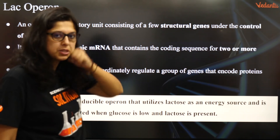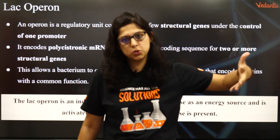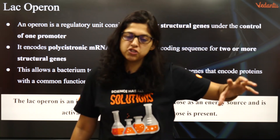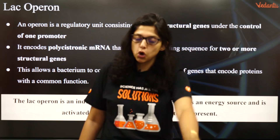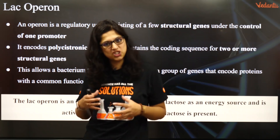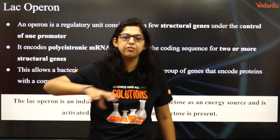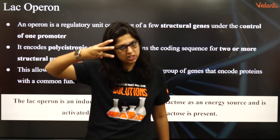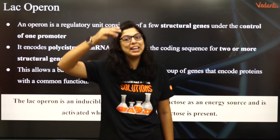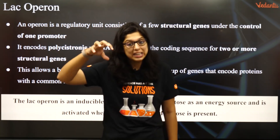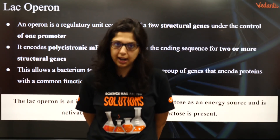What is a lac operon? First of all, it is a group of genes found in E. coli. An operon is a group of genes which function under a single operator. The operator is a gene which regulates many things. There are 3 structural genes: lac Z, lac Y, and lac A. The function of these 3 genes is controlled under a single operator.